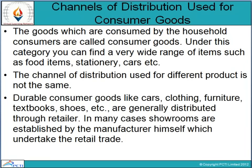Consumer goods are those consumed by household consumers. These include fast moving consumer goods (FMCGs) like soap and toothpaste, as well as food items, stationery, and cars. The channel of distribution differs for different products. Durable consumer goods such as cars, clothing, and furniture are generally distributed through retailers. In some cases, manufacturers establish their own showrooms and distribute the goods themselves.